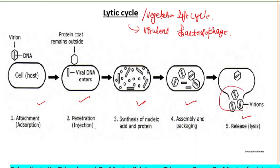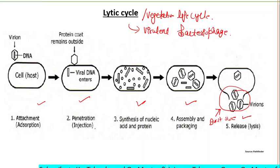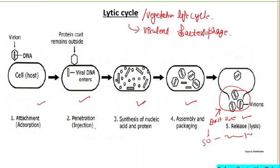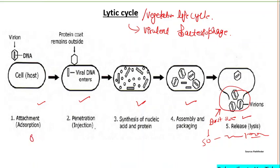The average number of phage particles produced per infected cell is called the burst size — it is characteristic of each virus and often ranges between 15 and several hundred. In the lytic cycle, a one-step growth curve is observed, which includes an eclipse period and a latent period.